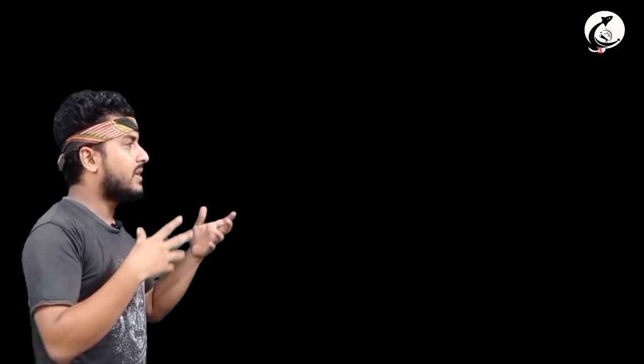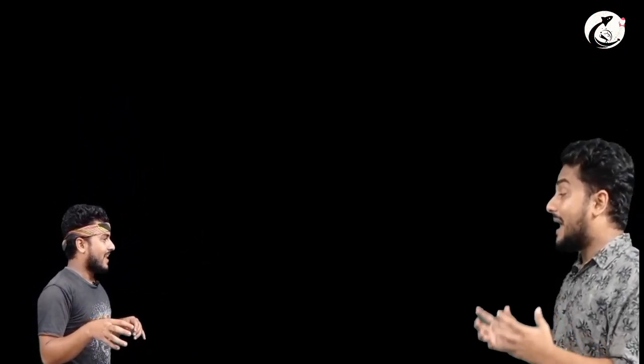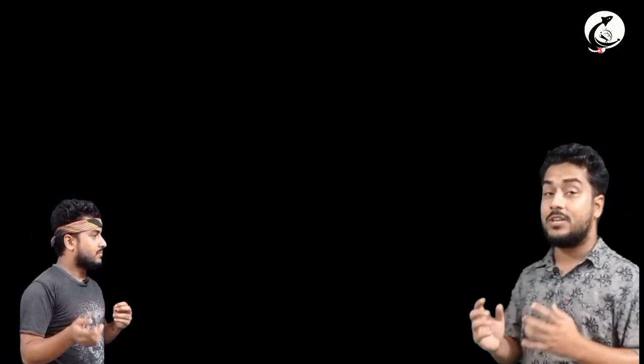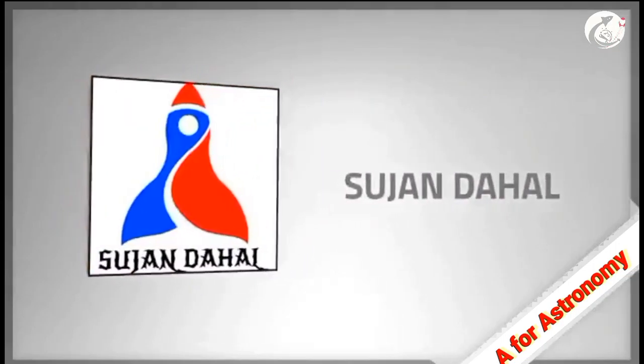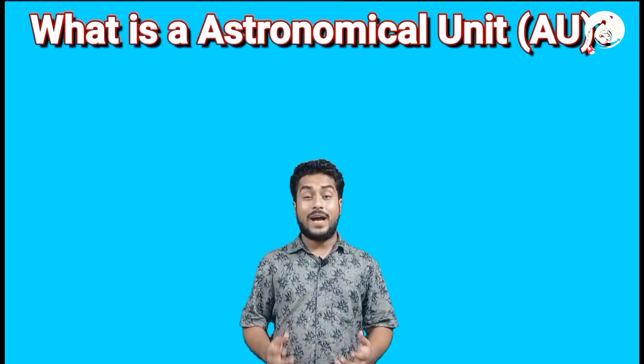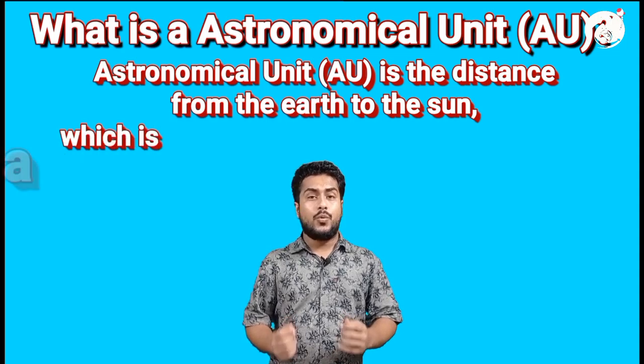I know that you know the astronomical unit is related to a light year. What is an Astronomical Unit? I am going to tell you about that. Astronomical Unit is the distance from the Earth to the Sun.